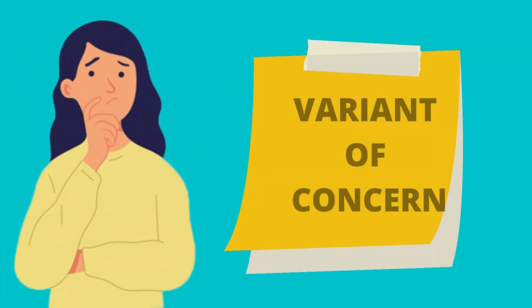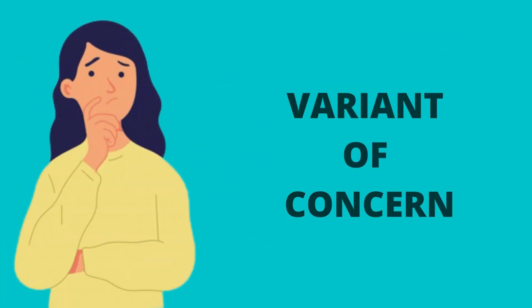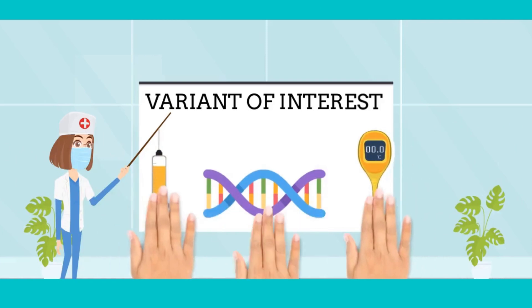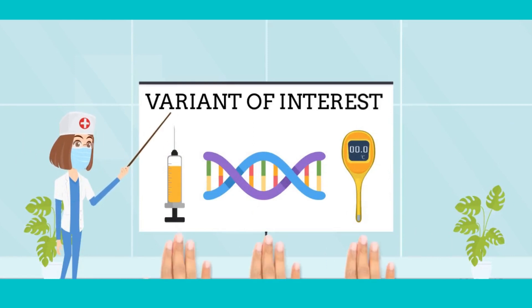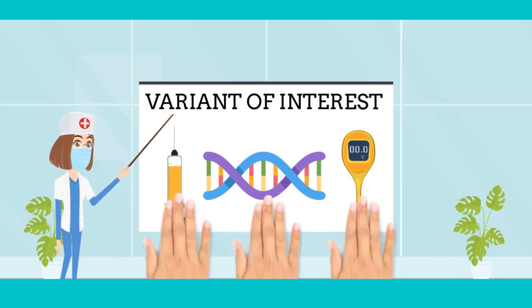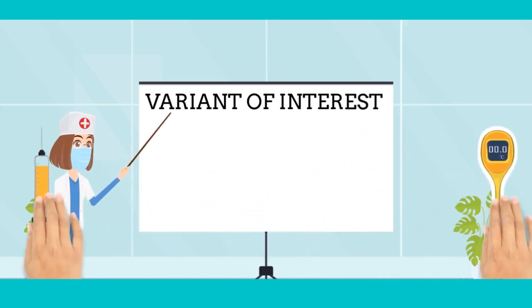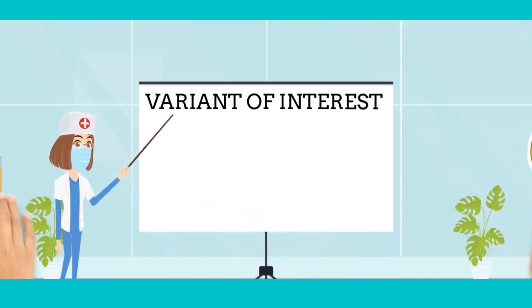The three classes are: variant of interest, variant of concern, and variant of high consequence. A variant of interest is one with specific genetic markers associated with changes to receptor binding, reduced efficacy of treatments, potential diagnostic impact, or a predicted increase in transmissibility or disease severity.